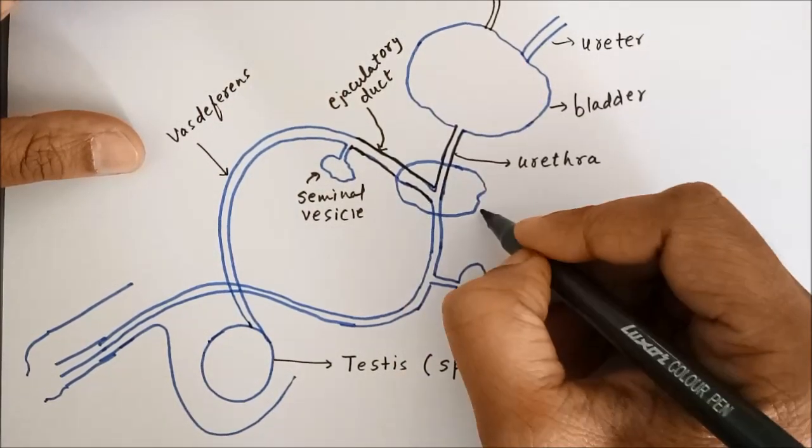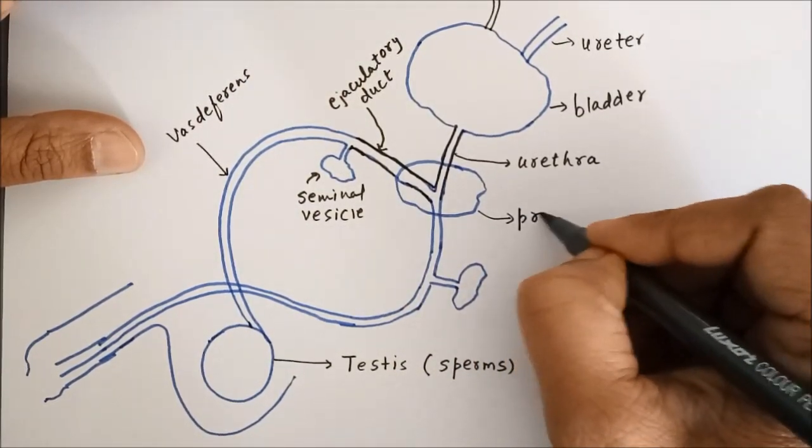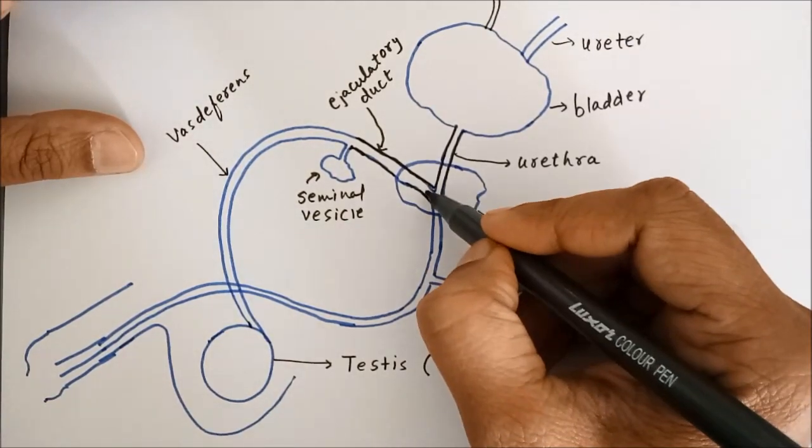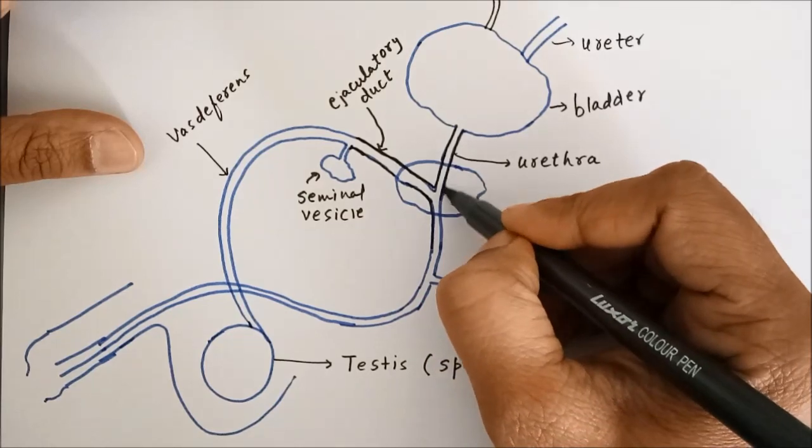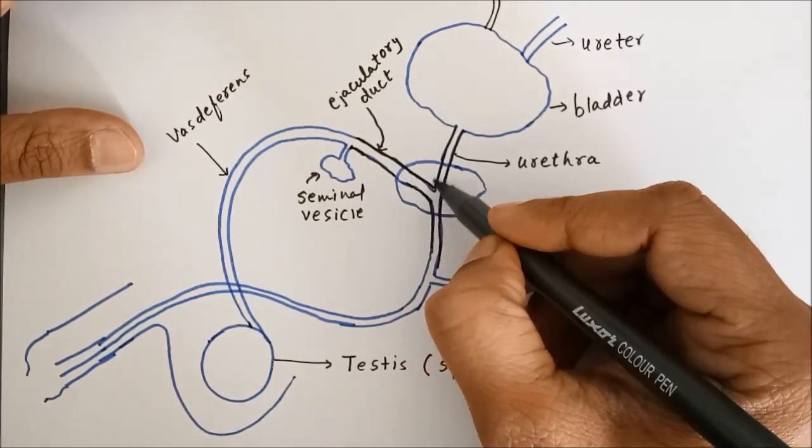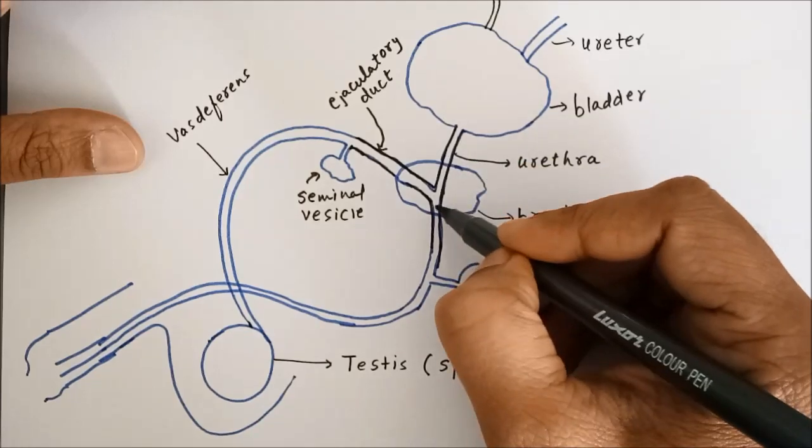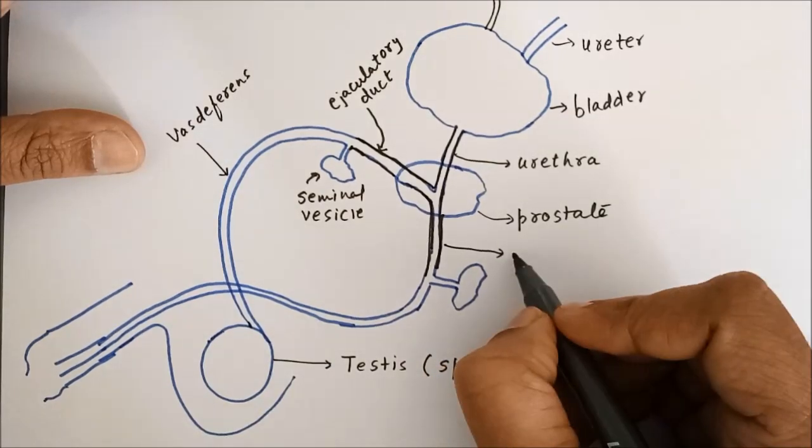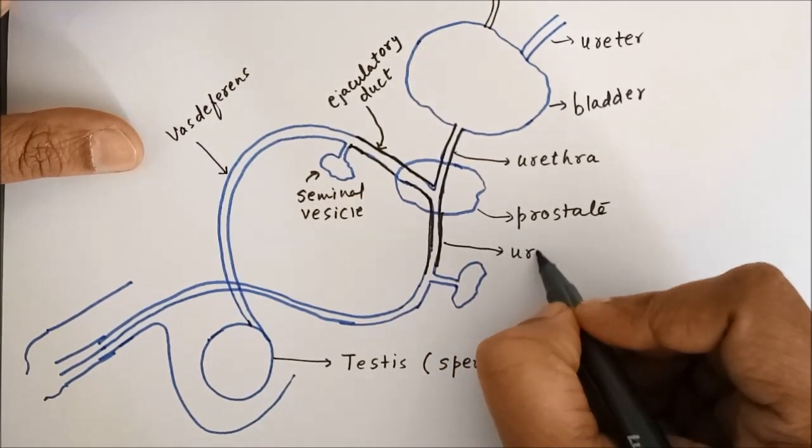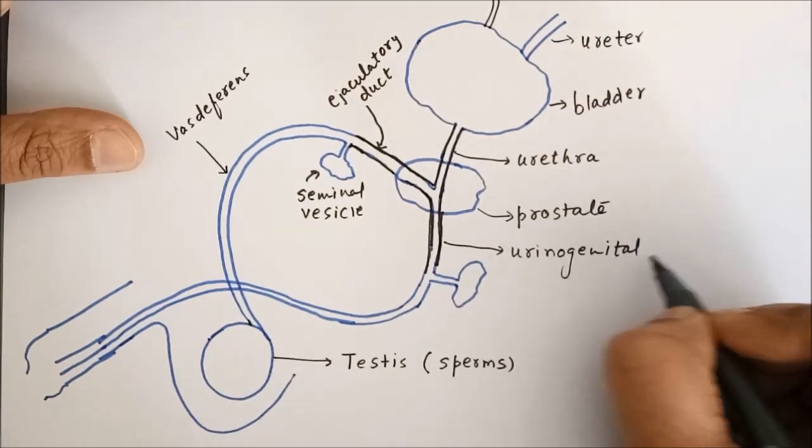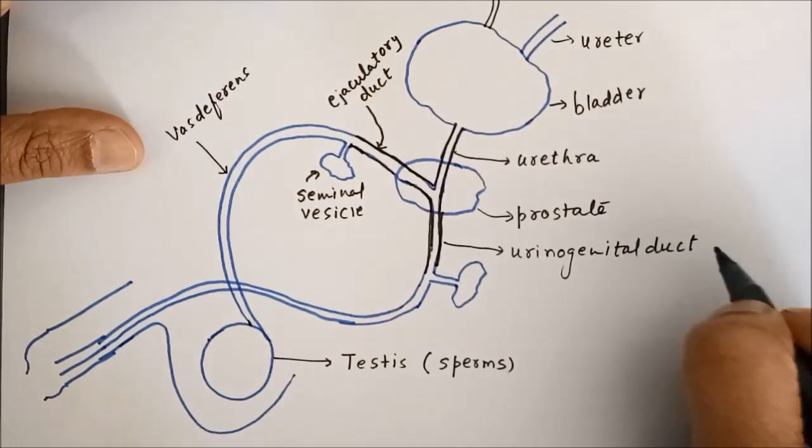This gland is prostate. This duct which is actually the joining of ejaculatory duct and urethra, this common duct is called urinogenital tract or duct.